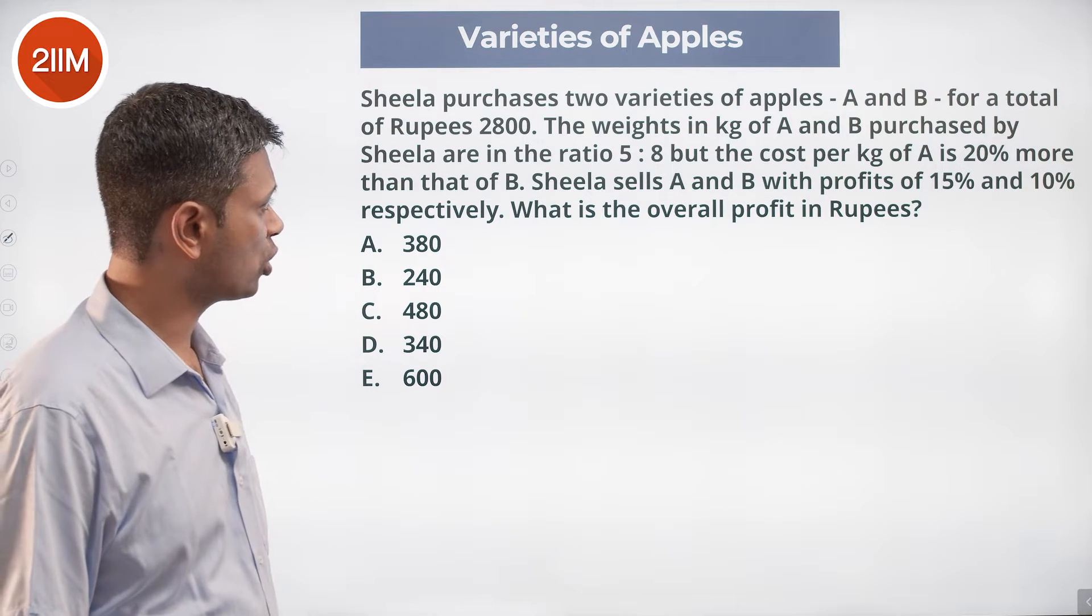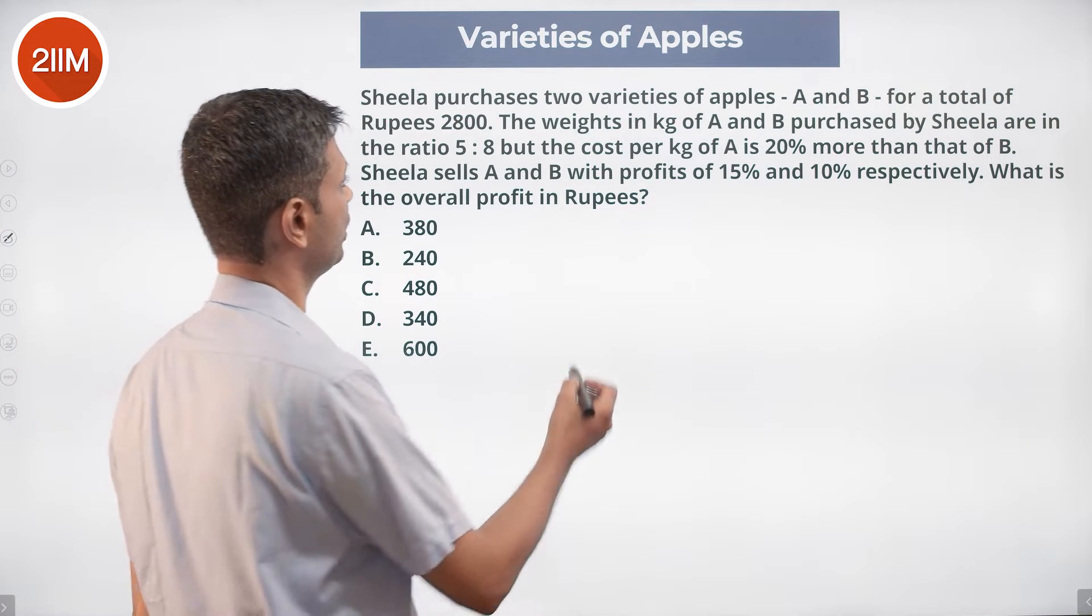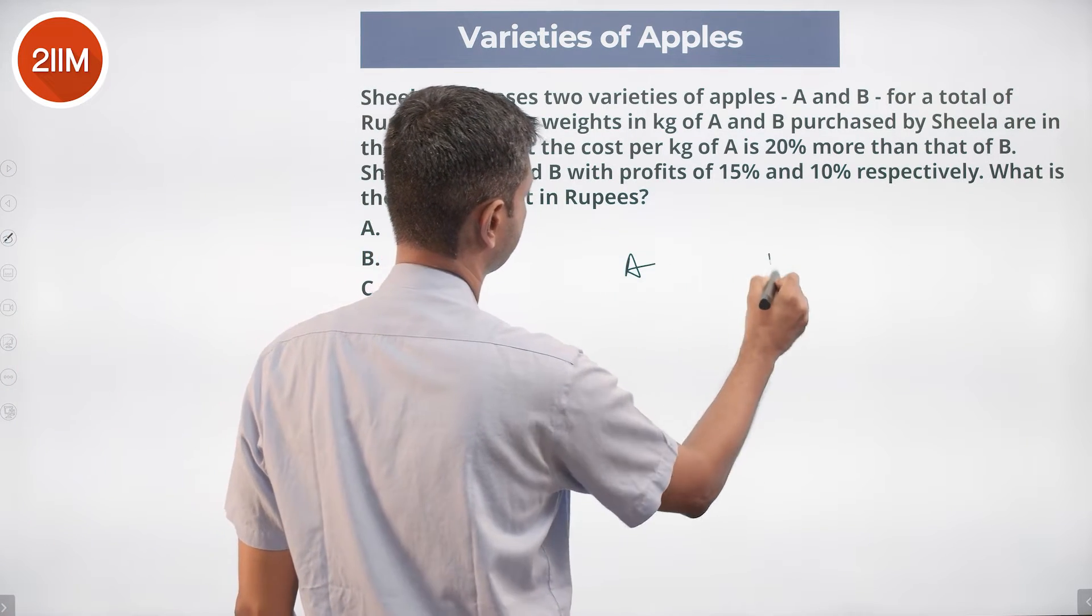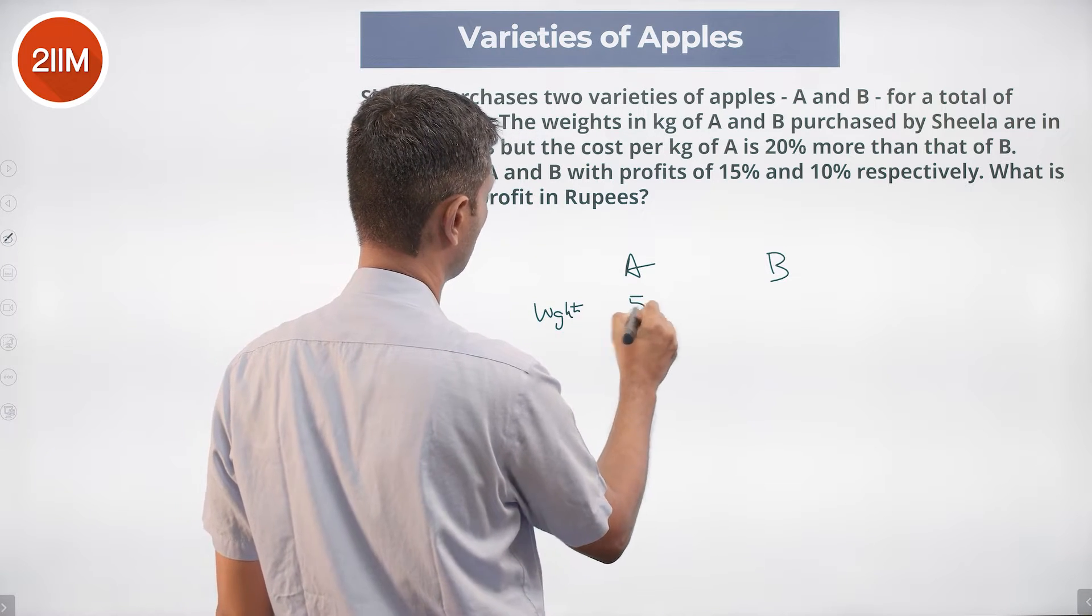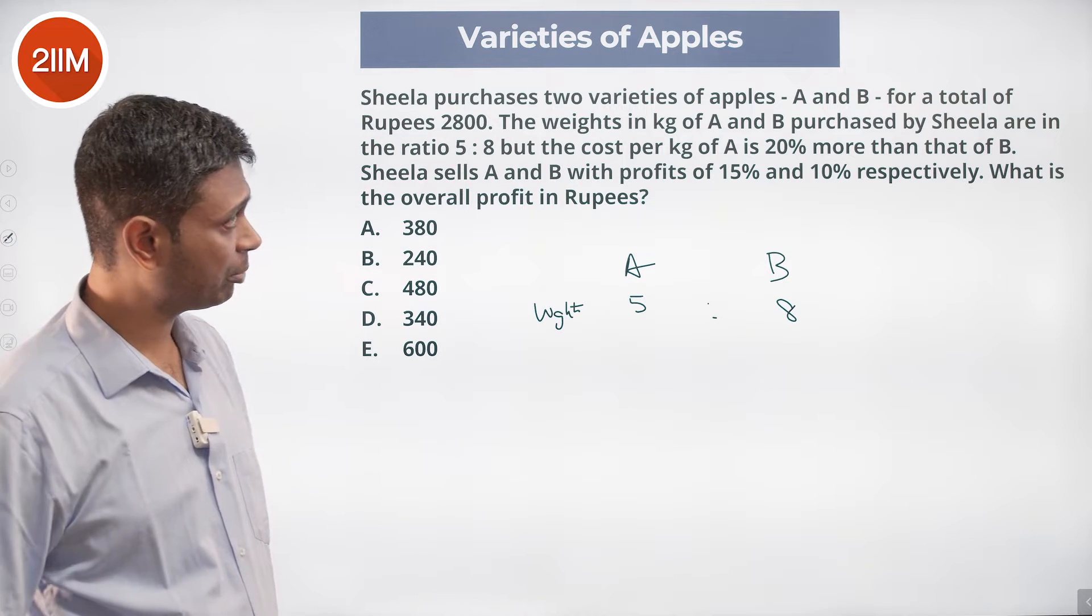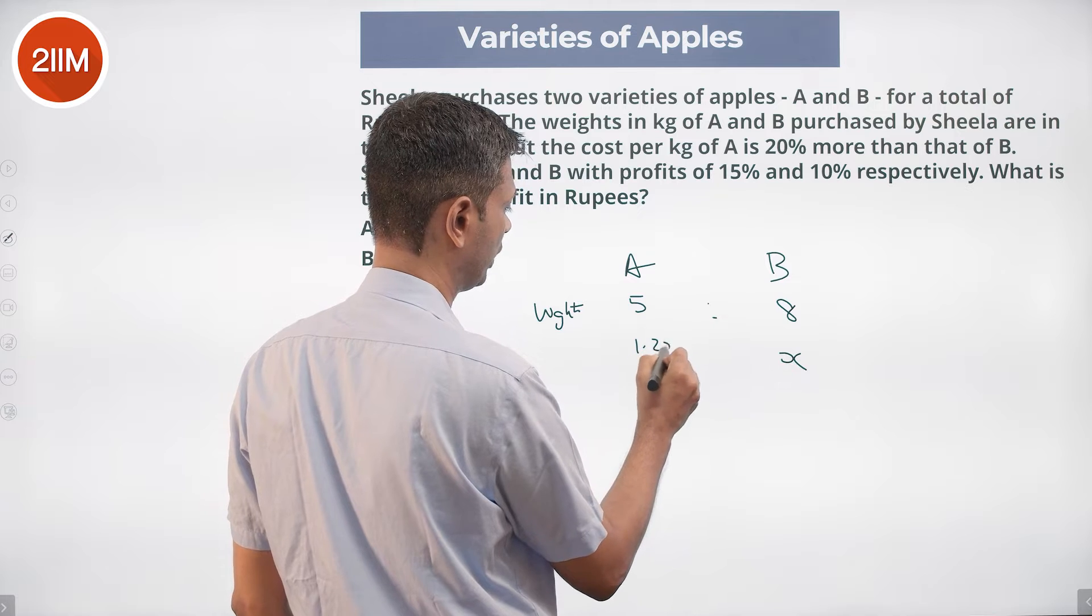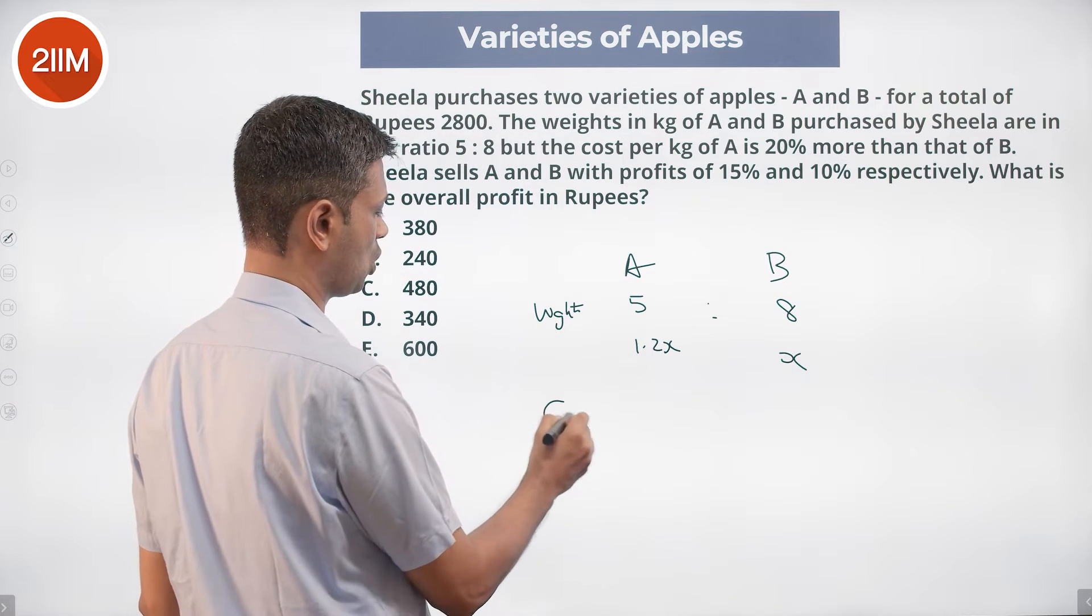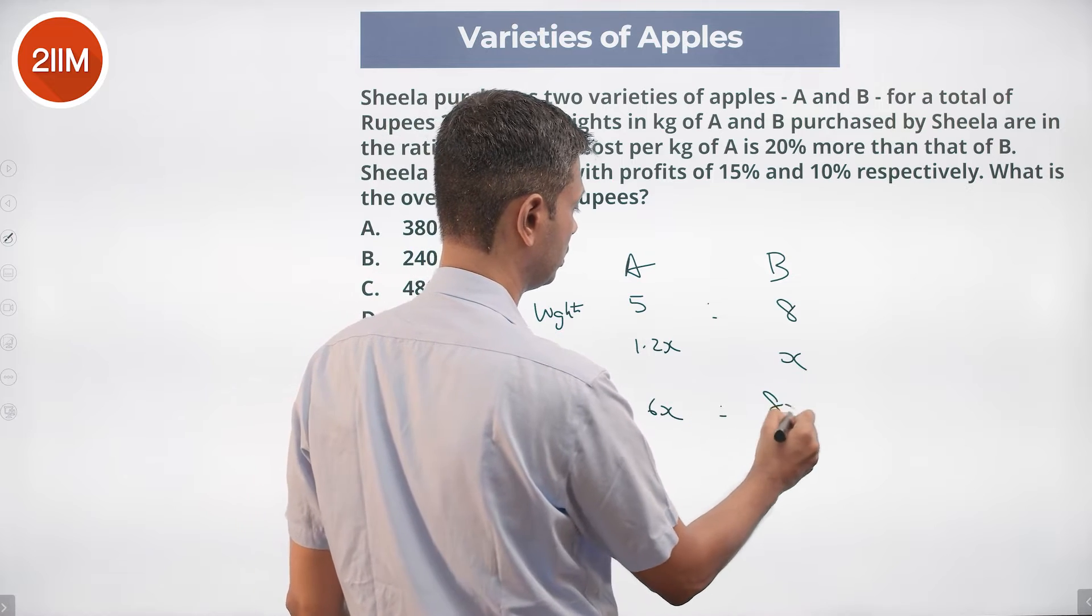The weights are in the ratio 5:8. Cost per kilogram of A is 20% more than that of B, so if B costs X, then A costs 1.2X. So the overall cost should be in the ratio 6X:8X, which simplifies to 6:8 or 3:4.